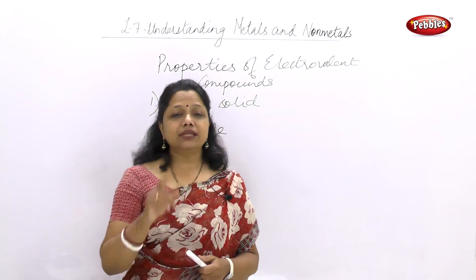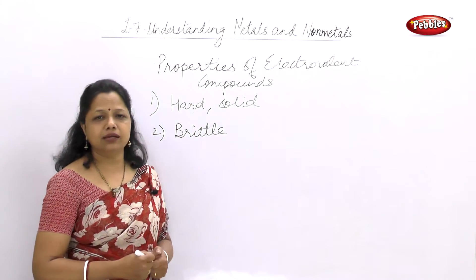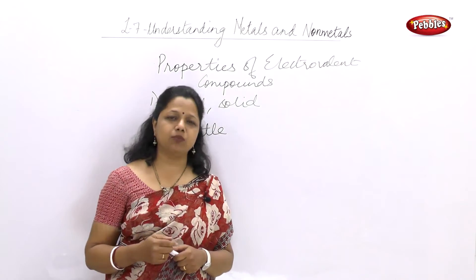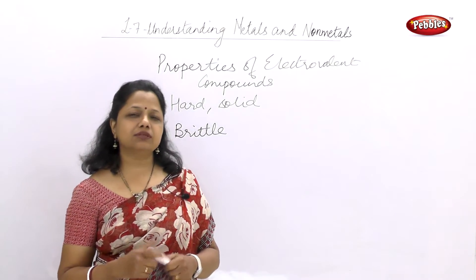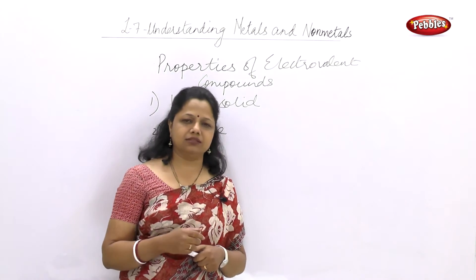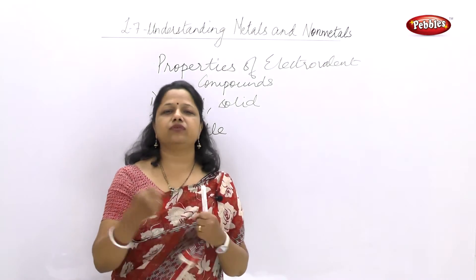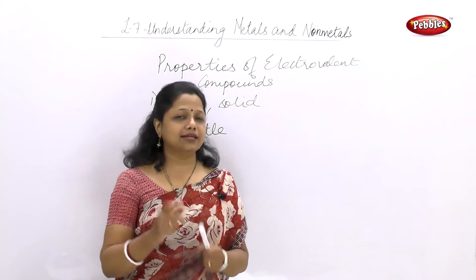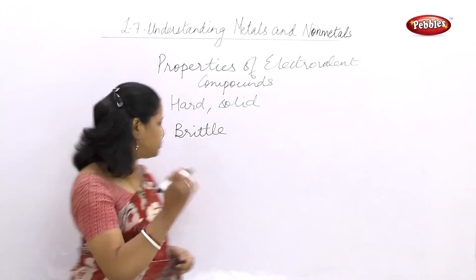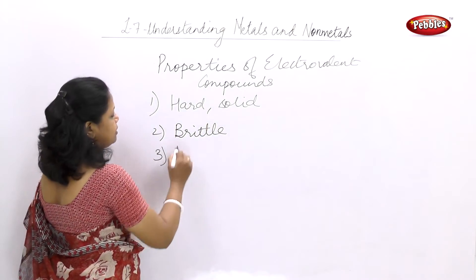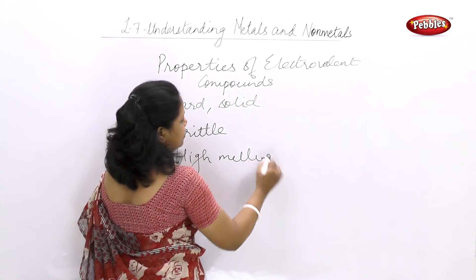The third property which identifies ionic or electrovalent compounds is that they have very high melting and boiling points. Why do they have high melting and boiling points? The simple logical answer is that it requires a large amount of energy to break those forces of attraction, because the force of attraction is very strong in ionic compounds. So the third property: high melting and boiling points.